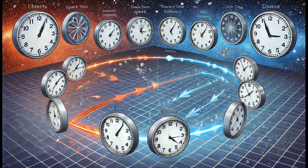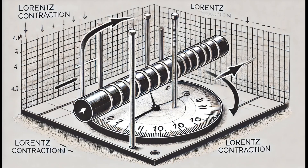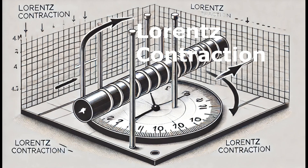Now we will explore a critical concept in special relativity known as Lorentz contraction. This concept deals with how the length of a moving object is measured differently by observers in different inertial frames of reference.